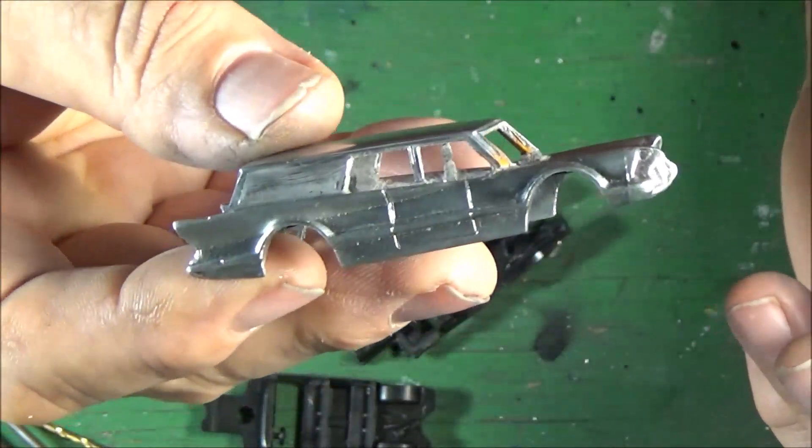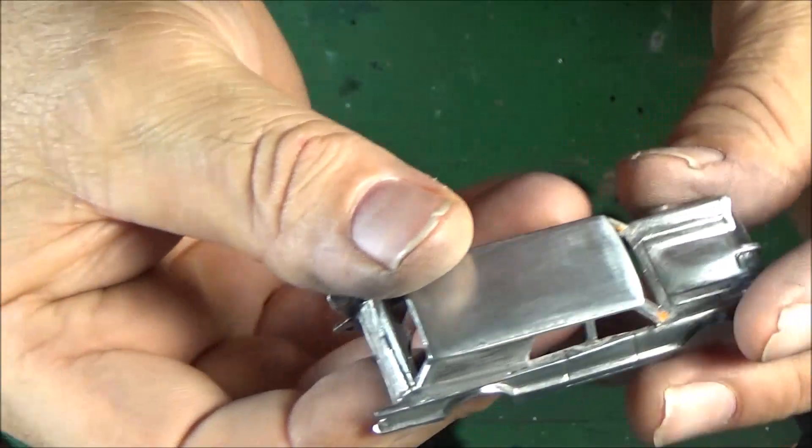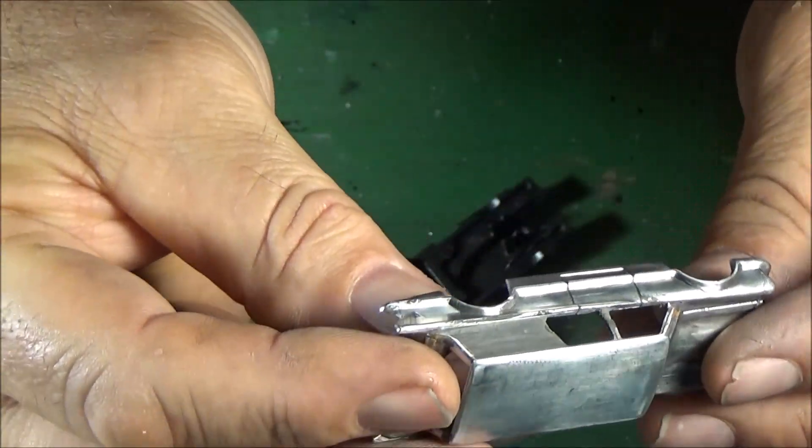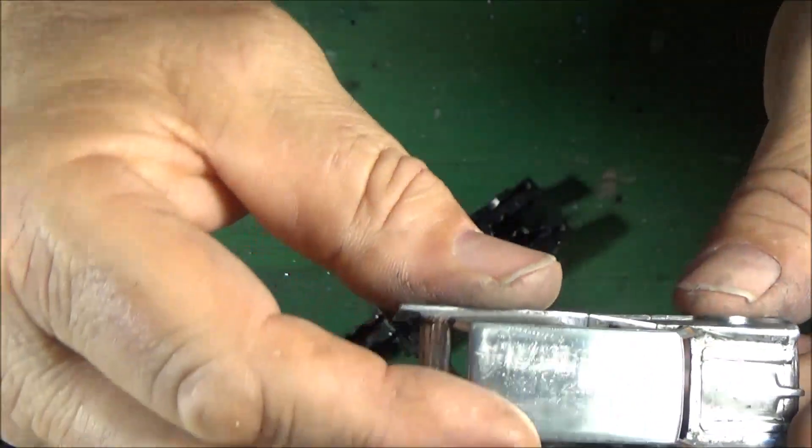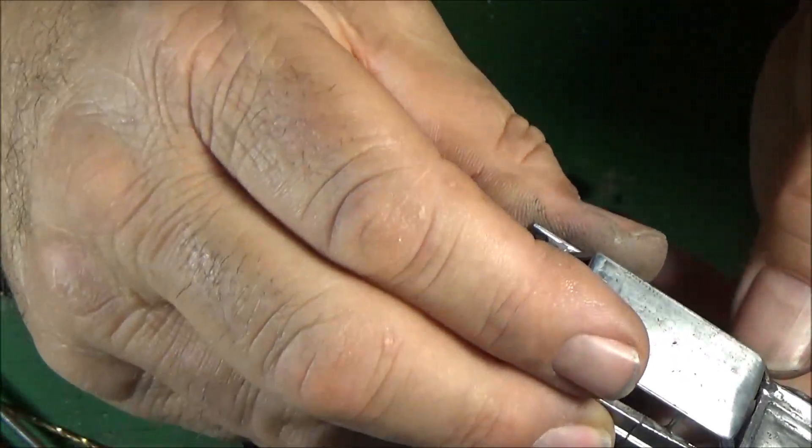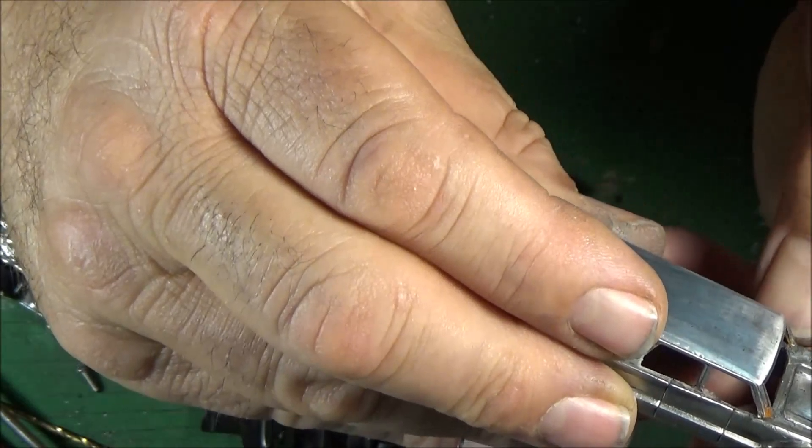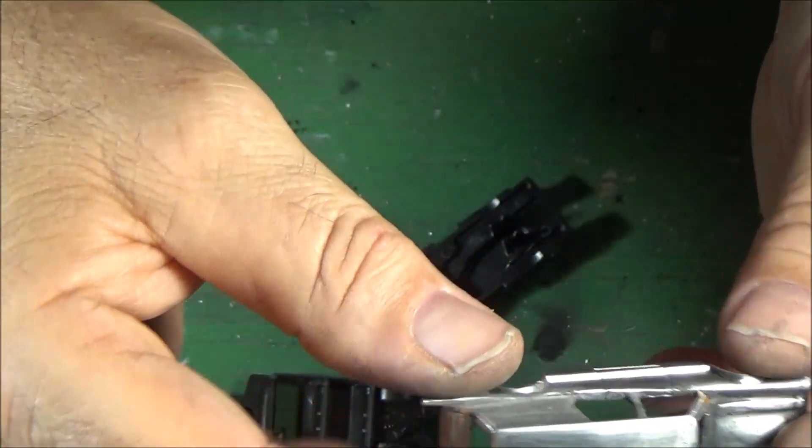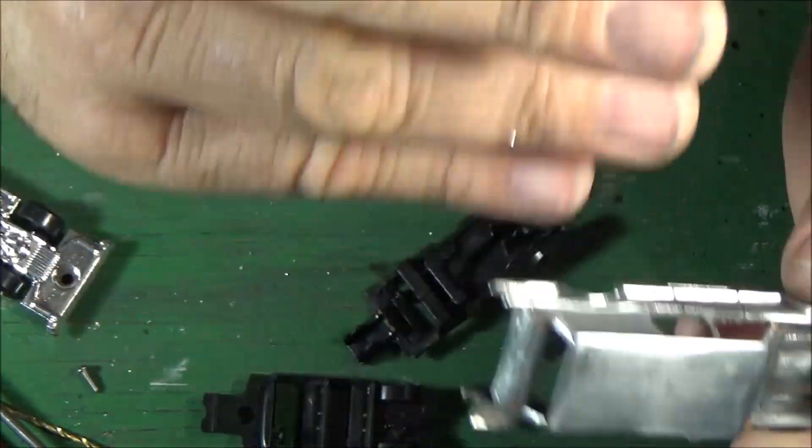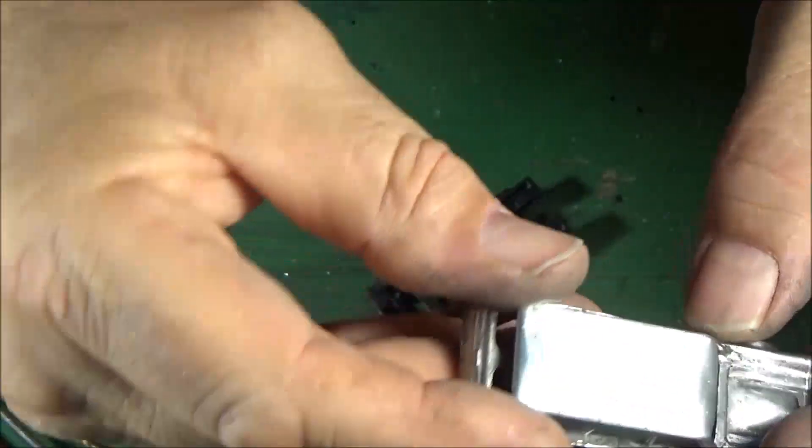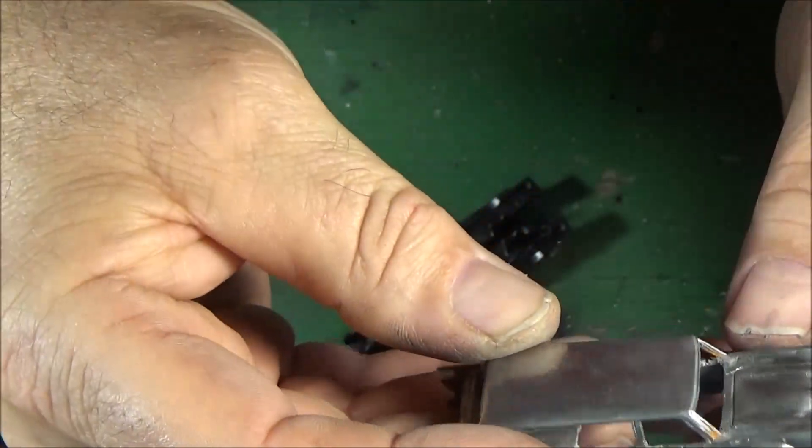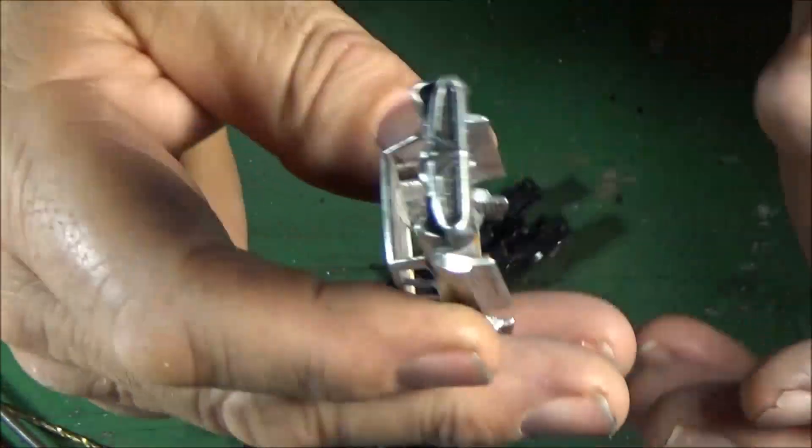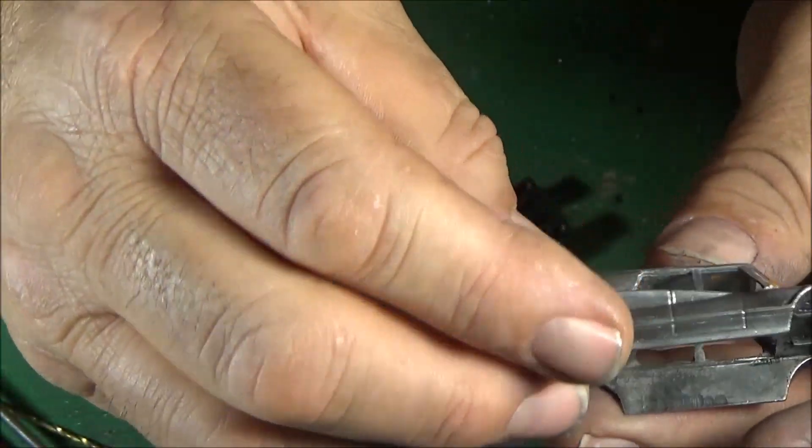So that's where we're at right now. Next step is to prime it and see how it looks. Like I said, might have to fill these door lines in. That might be the next thing, just to fill those door lines in. Because the Batmobile was a two door car even though it was made from a four door car. I think it was made from a Lincoln, wasn't it? This is supposed to be a Cadillac. Anyway, let me get to it.